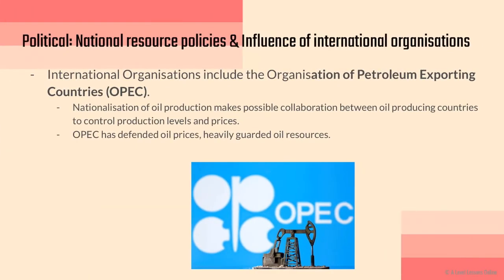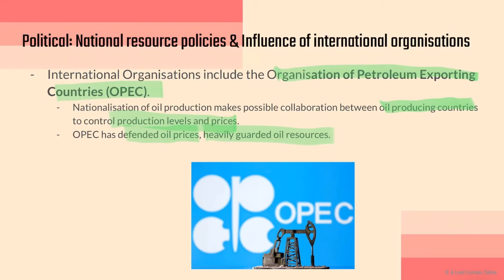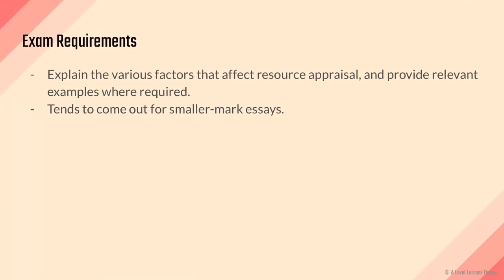One example is OPEC — the Organization of Petroleum Exporting Countries. They handle a large portion of global oil supply. Nationalization of oil production makes possible collaboration between oil-producing countries to control production levels and prices. OPEC seeks to balance everything, ensuring a fair price and quantity is produced. OPEC has heavily guarded oil resources, leading to both price spikes and downfalls in the economy at times, all under a controlled set of measures — all of which affect the resource appraisal of oil.